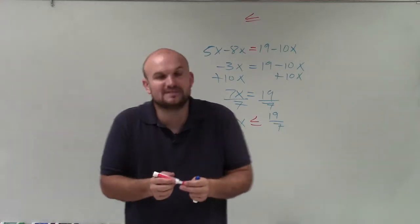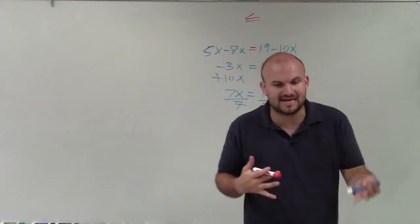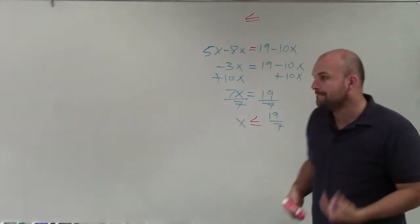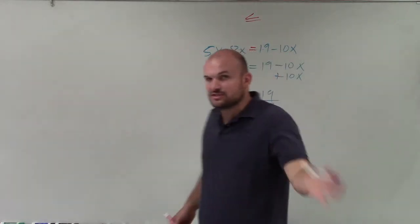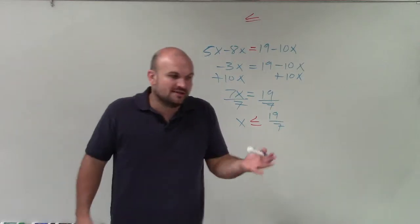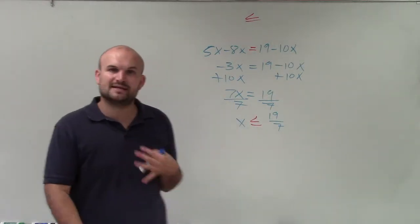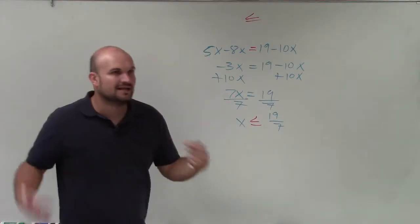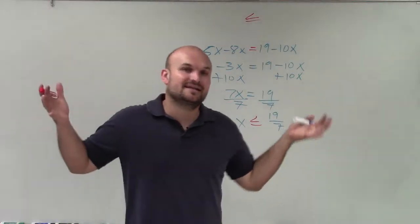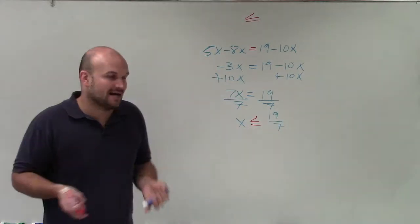And that's really basically the only difference, besides what exactly our solution set is going to be. We're still using inverse operations. The only thing is whenever you multiply and divide by a negative number, you just have to flip the inequality symbol. But as far as solving, the basic idea is the same. Get your variable isolated on one side.